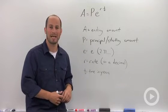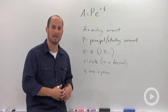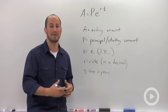So PERT. A equals PE to the RT. We use this whenever we are calculating interest that has been compounded continuously.